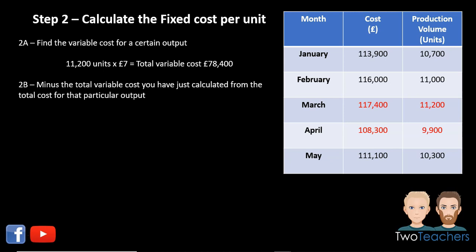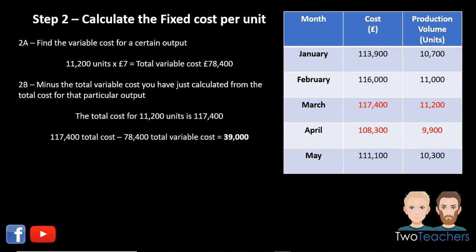The difference between the total cost for 11,200 units and the total variable cost is the fixed element — this is a crucial part of the high-low method. We know the total cost for 11,200 units is £117,400 as shown in the table. Therefore £117,400 minus £78,400 leaves £39,000. This is your fixed element.